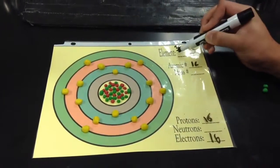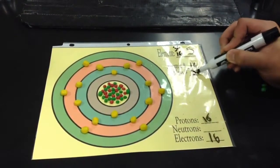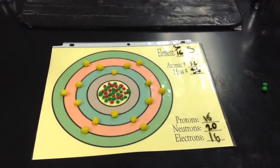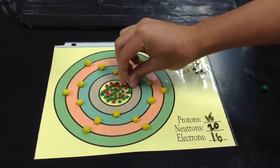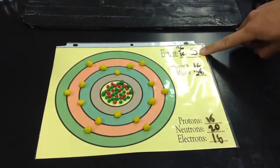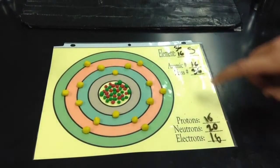Sulfur-36 is the last of our stable isotopes. It has 16 protons, 16 electrons, and 20 neutrons, which gives it a mass of 36 atomic mass units. It is the rarest of the stable sulfur isotopes, appearing only about 0.02% of the time.